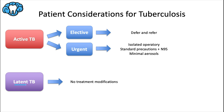For patient considerations, it depends on whether the patient has active or latent TB. If it's a latent infection, it's non-infectious and they can be treated in the dental office under standard infection control precautions. For active TB, if it's an elective procedure, postpone treatment and refer to a physician; once deemed non-infectious, they can be seen. For urgent care, patients should be seen in a facility with an airborne infection isolation room, and staff must wear custom-fit N95 masks — surgical masks are not sufficient. Aerosols should also be minimized.